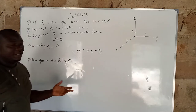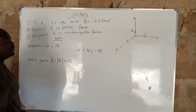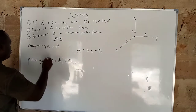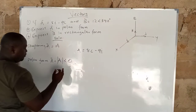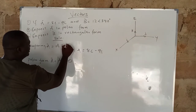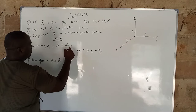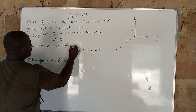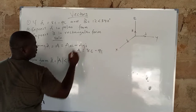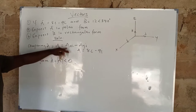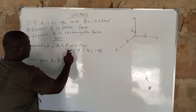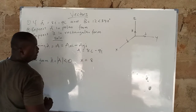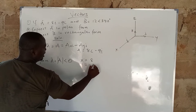If I want to compare this vector to the standard formula, the vector A equals Ax·i plus Ay·j. By comparison, that means your X equals 8, and your Y equals minus 9.